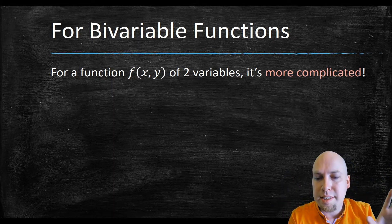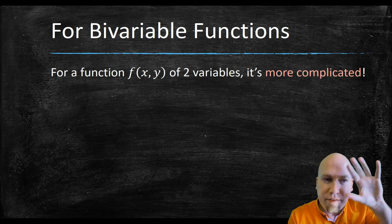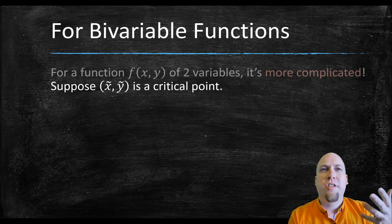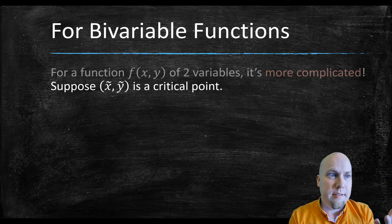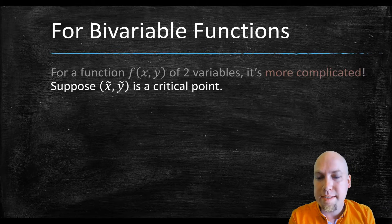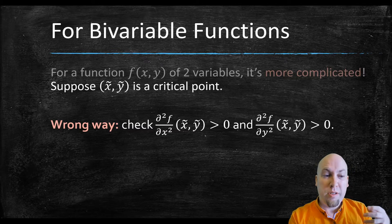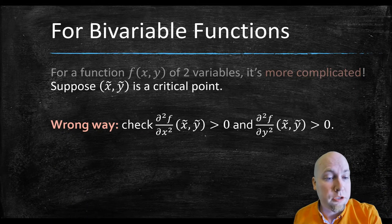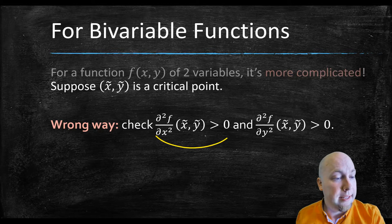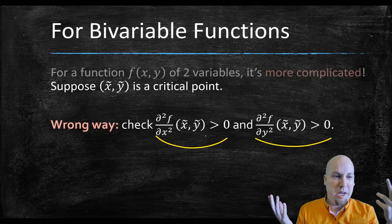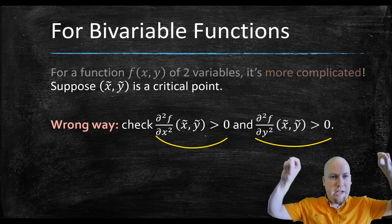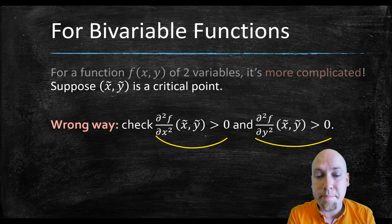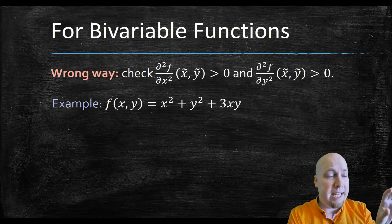We're going to focus on just functions of two variables here — it's even nastier for functions of three or more variables. Let's first think about what we wish the answer was, and then show why that's wrong. Maybe your first guess to show a function is concave up — so your critical point is a minimum — is to just check the two partial derivatives: the second x partial and the second y partial.